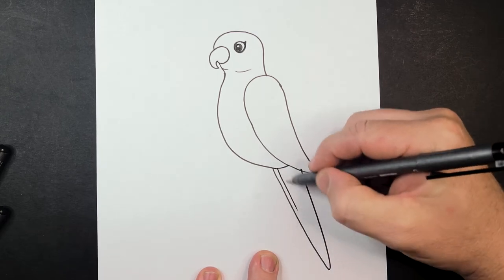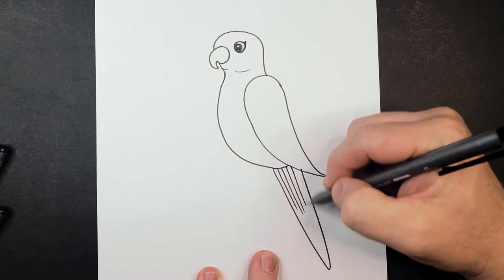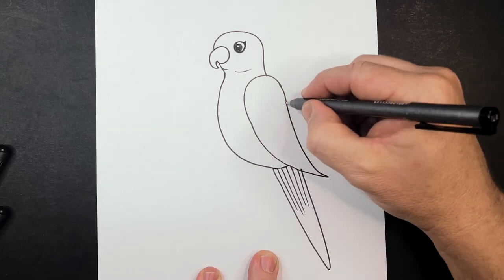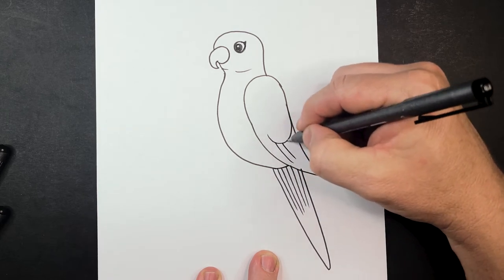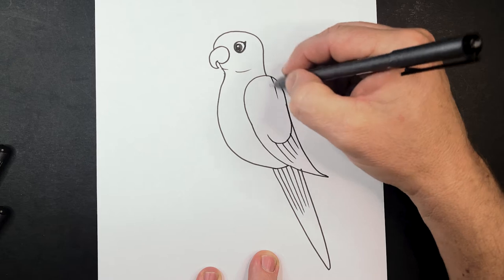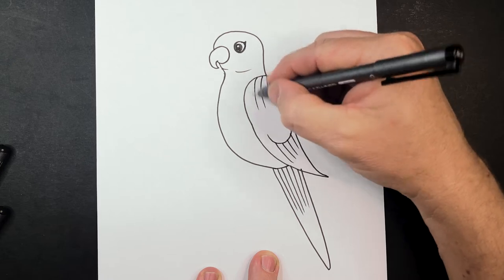Now I'm flicking these lines, I'm starting and then flicking them out and lifting my pencil as I go out and that helps go from thick to thin with the lines. I'm doing the same on the wing to make them look like they are feathers.